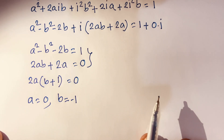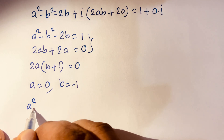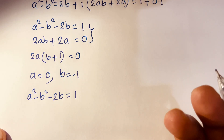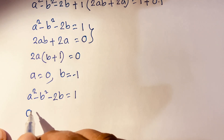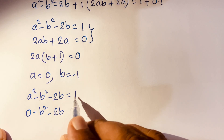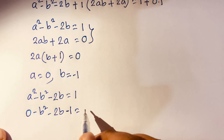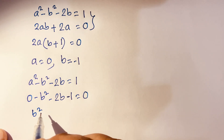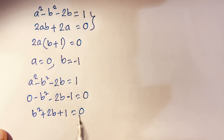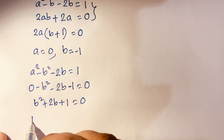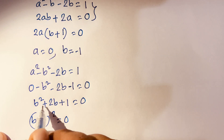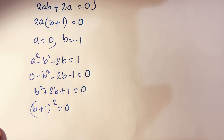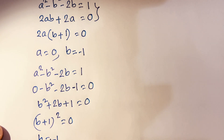Substituting a = 0 into a² − b² − 2b = 1 gives −b² − 2b − 1 = 0, or b² + 2b + 1 = 0. This factors as (b + 1)² = 0, using the identity a² + 2ab + b² = (a+b)². So b = −1.